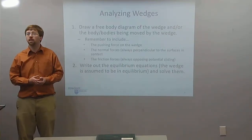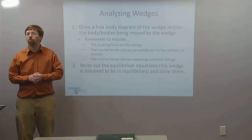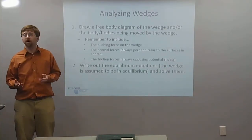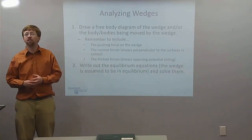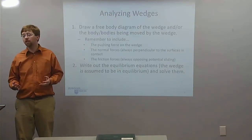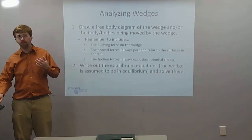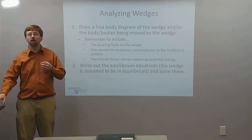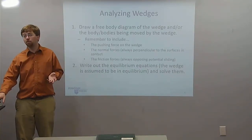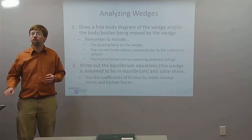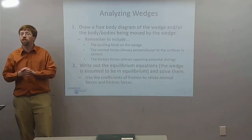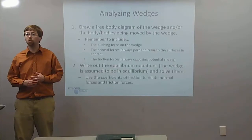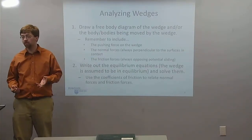After that, we write out the equilibrium equations. We assume the wedge and the bodies being moved are moving fairly slowly with no acceleration, so we're assuming they're in equilibrium. That lets us write the sum of forces in x equals zero, sum of forces in y equals zero, and if needed, sum of moments. We also need to remember the coefficients of friction, as they relate the normal forces to the corresponding friction forces.